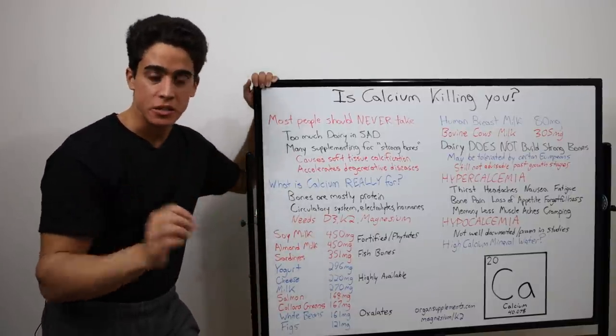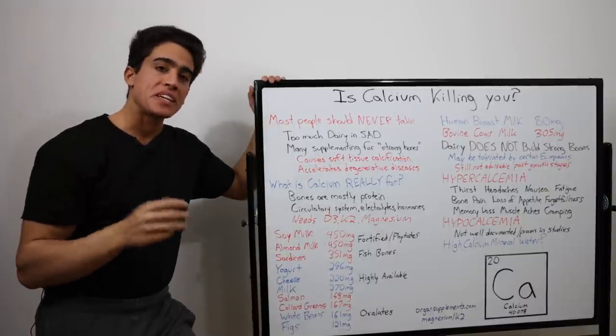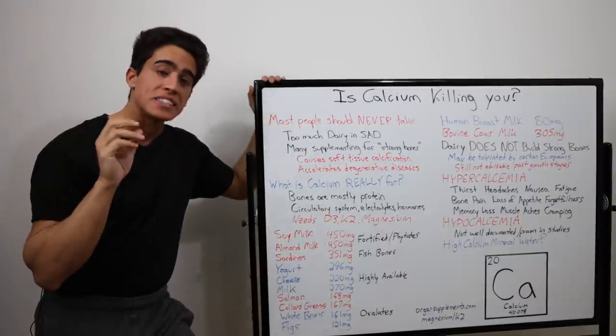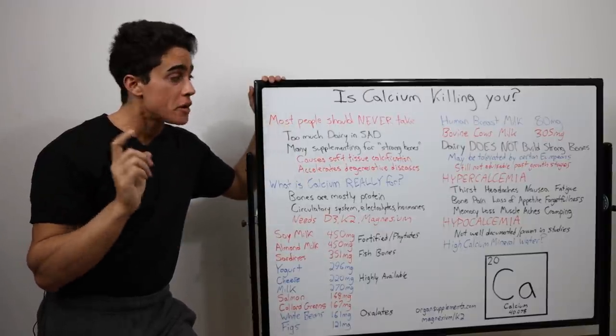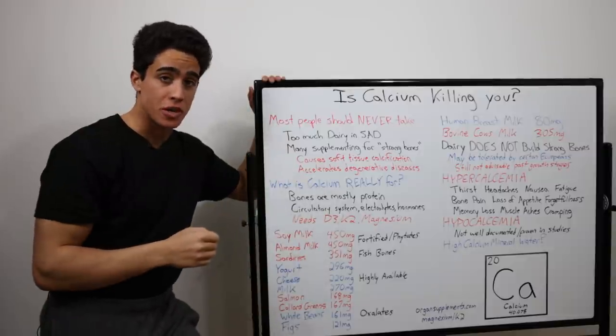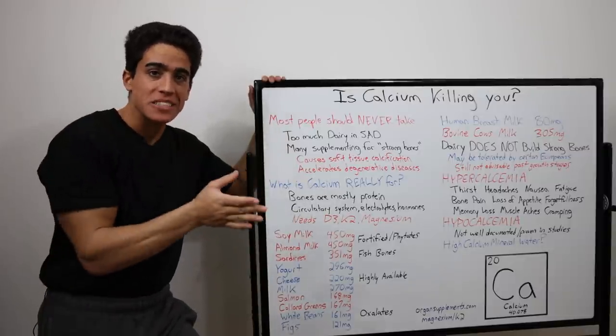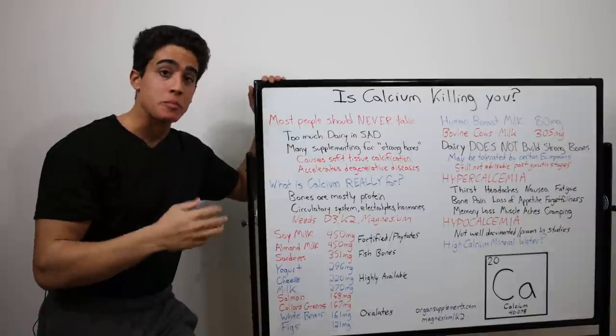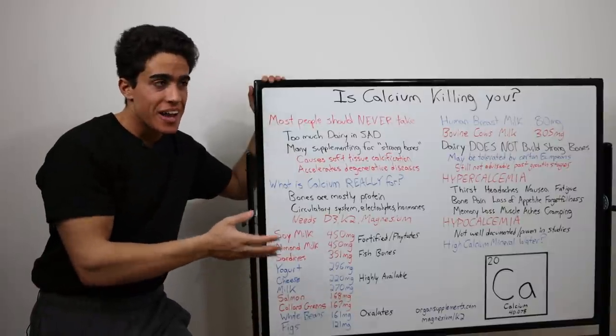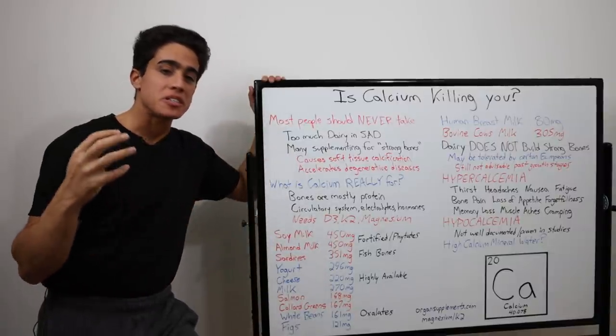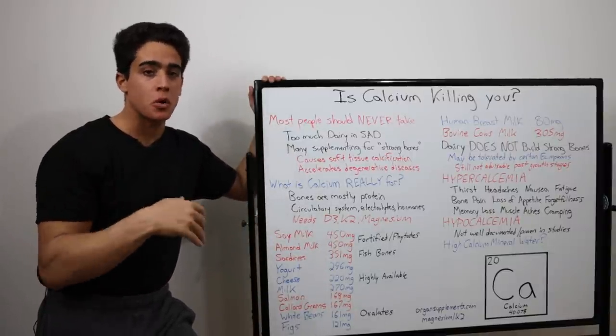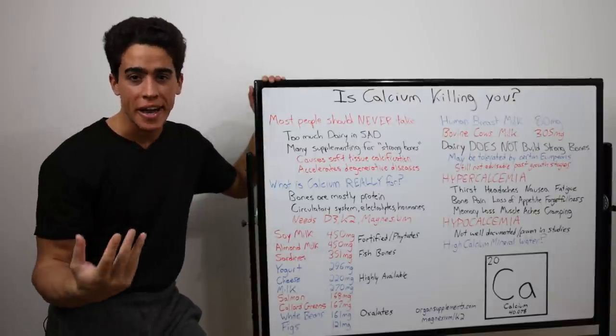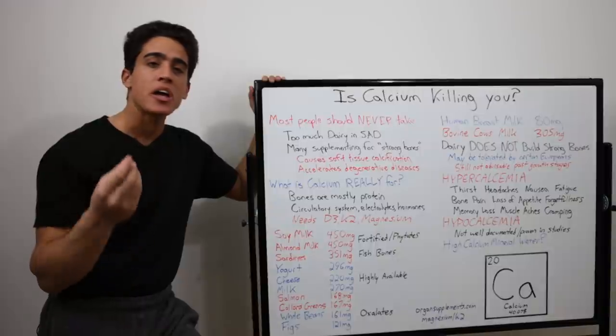One interesting comparison is that human breast milk has 80 milligrams of calcium versus 305 milligrams in cow's milk. That's basically four times the amount of calcium in the source of dairy that people are consuming. I'm assuming that's because cows are much heavier, their bones are denser, they need more calcium.